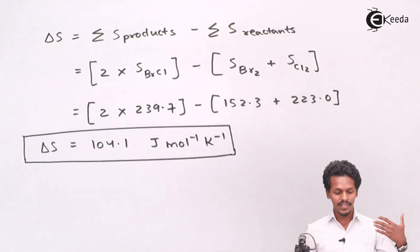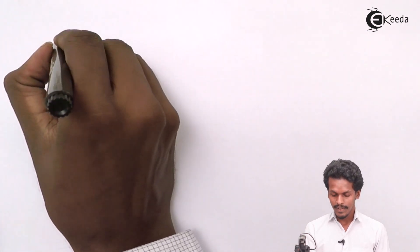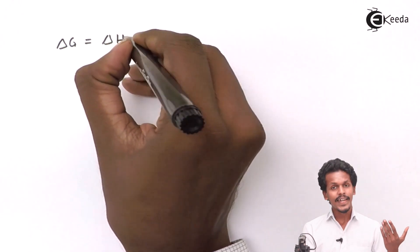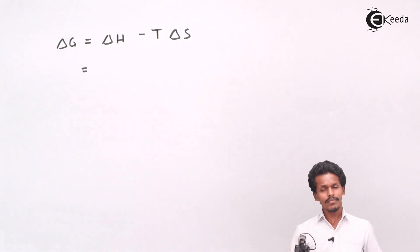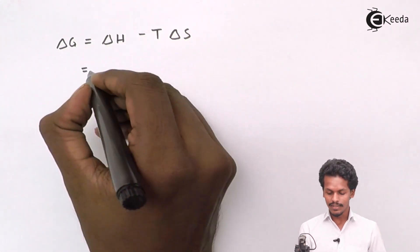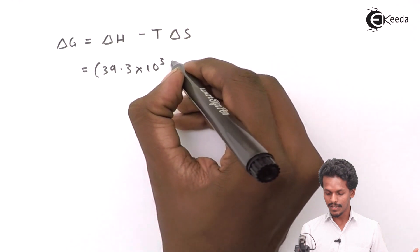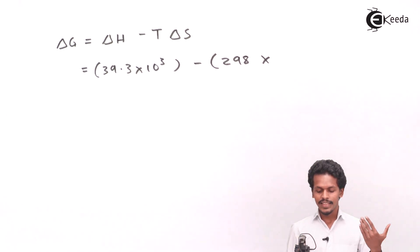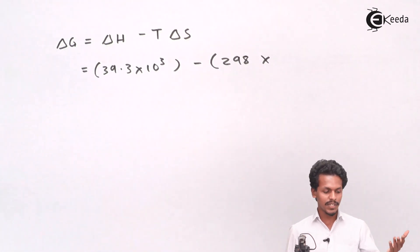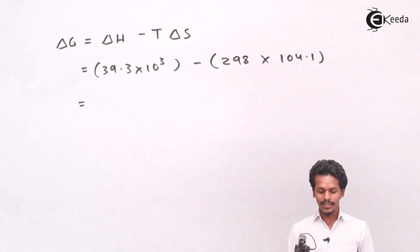To calculate the free energy change, we use: ΔG = ΔH − TΔS. Substituting: ΔH = 39.3 × 10³ J, T = 298 K, and ΔS = 104.1 J/mol/K. So ΔG = 39300 − (298 × 104.1).